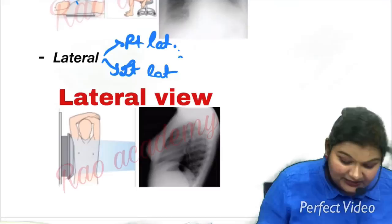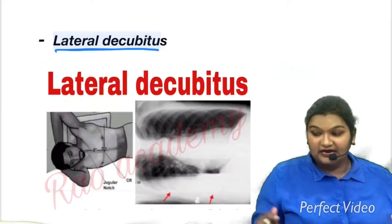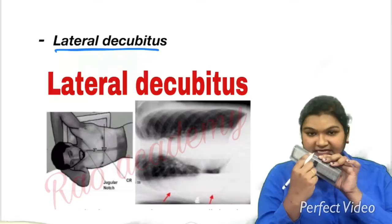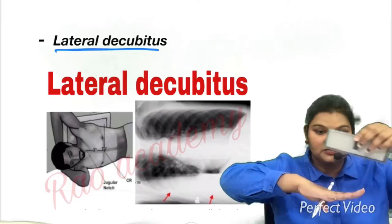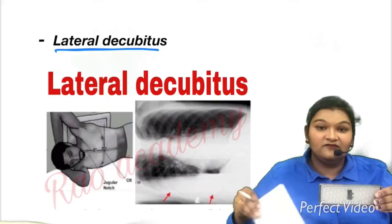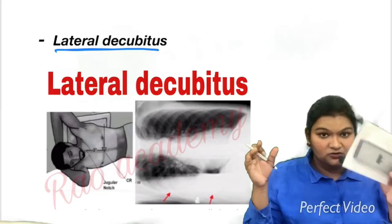Now the lateral decubitus view is somewhat different. The patient lies down on one of their sides on the table. The film is placed on the posterior side, and the x-rays come from the front side, hitting the patient, and the image is obtained on the screen. This is the lateral decubitus view.